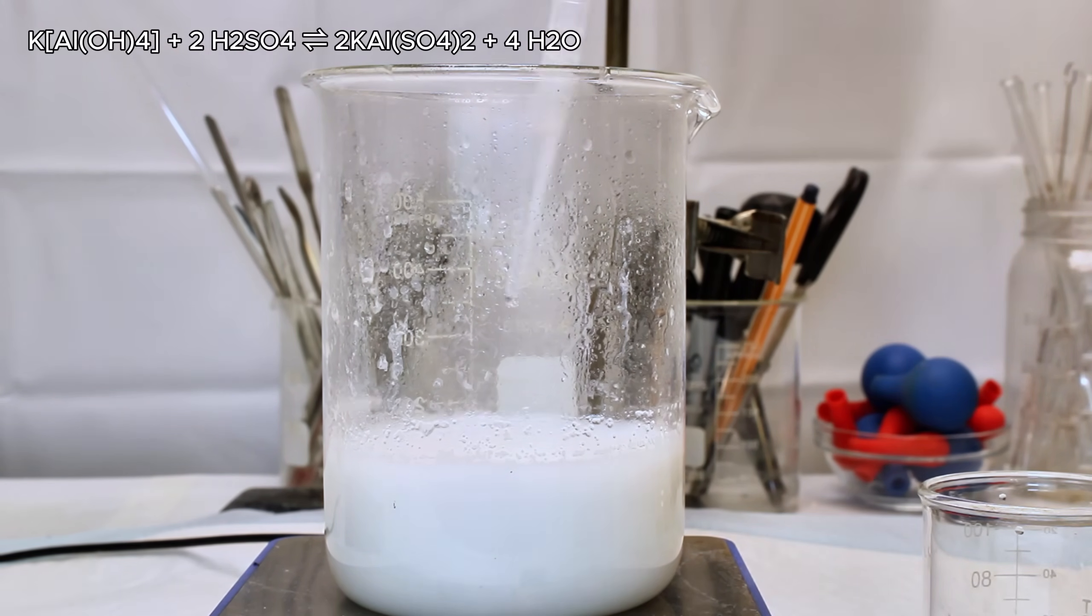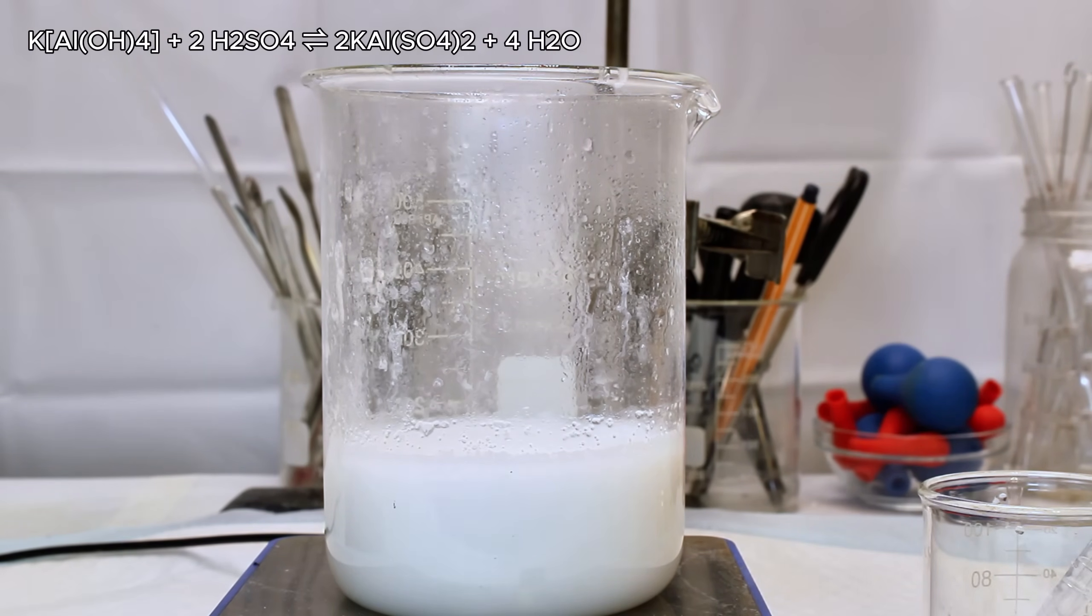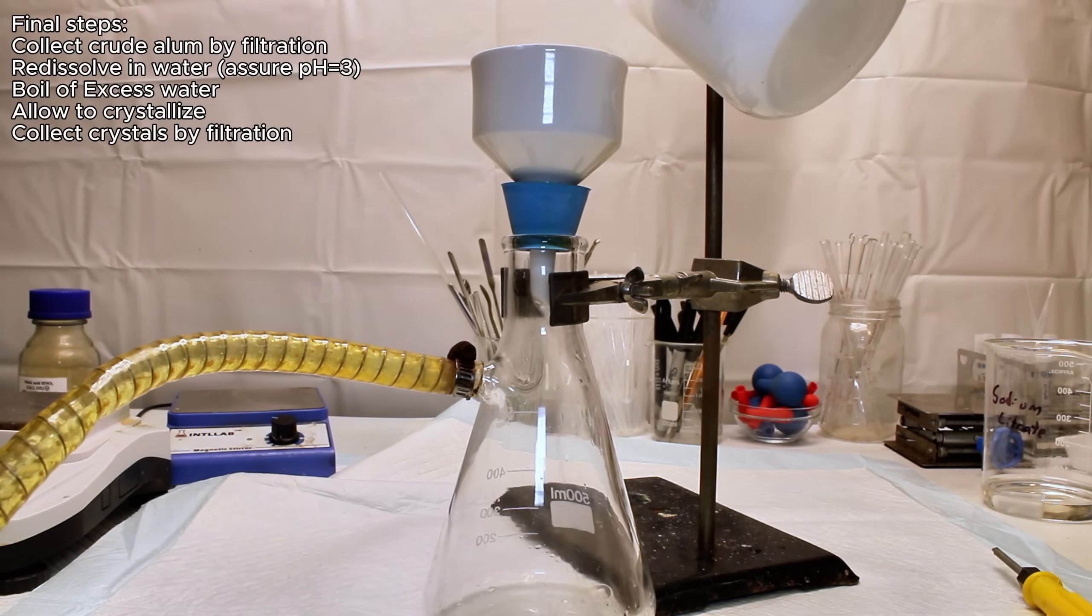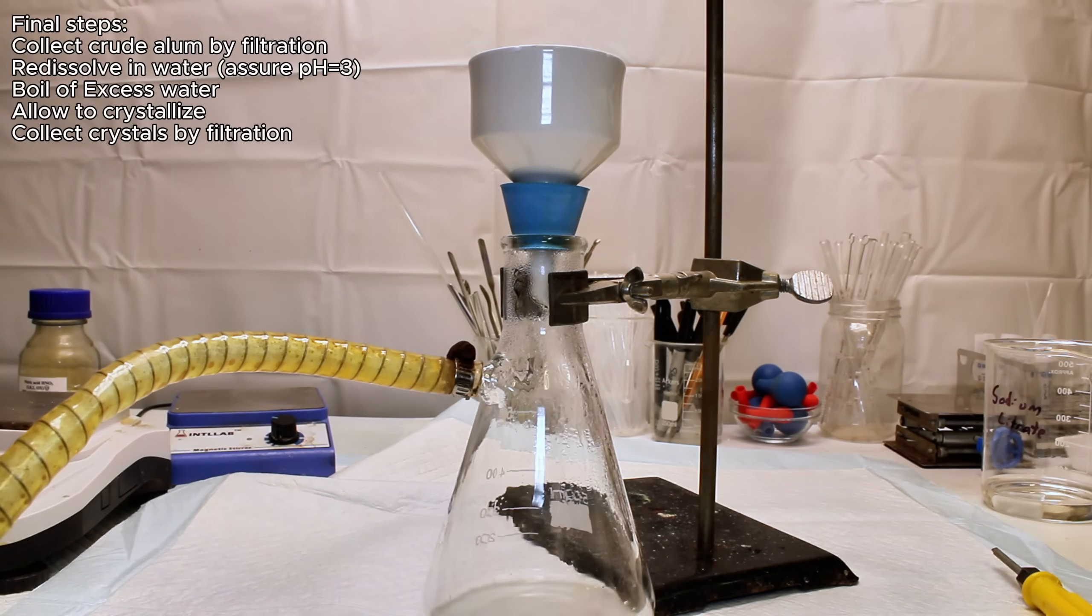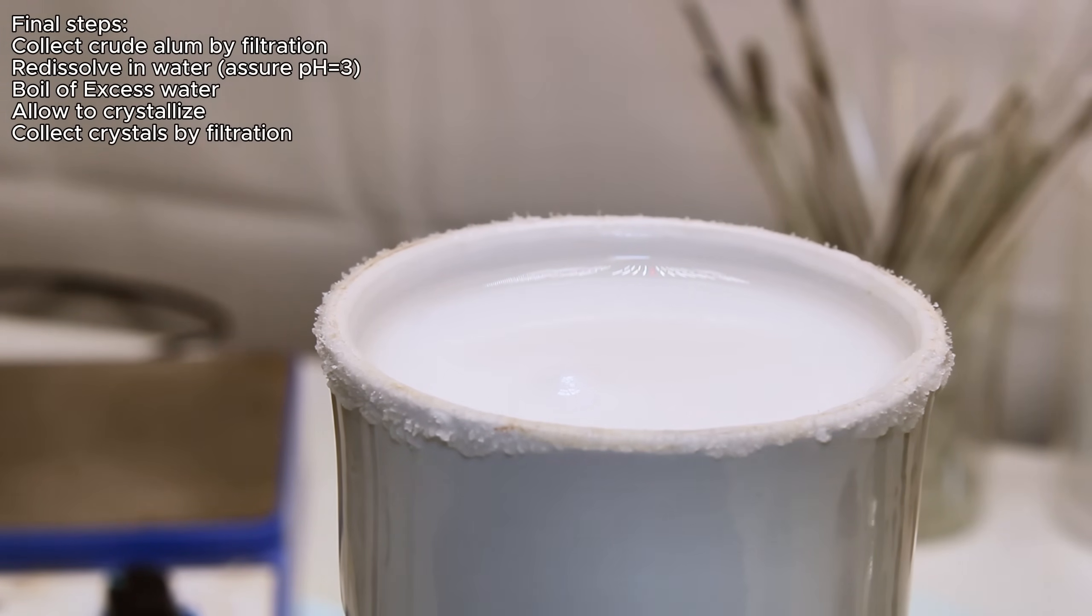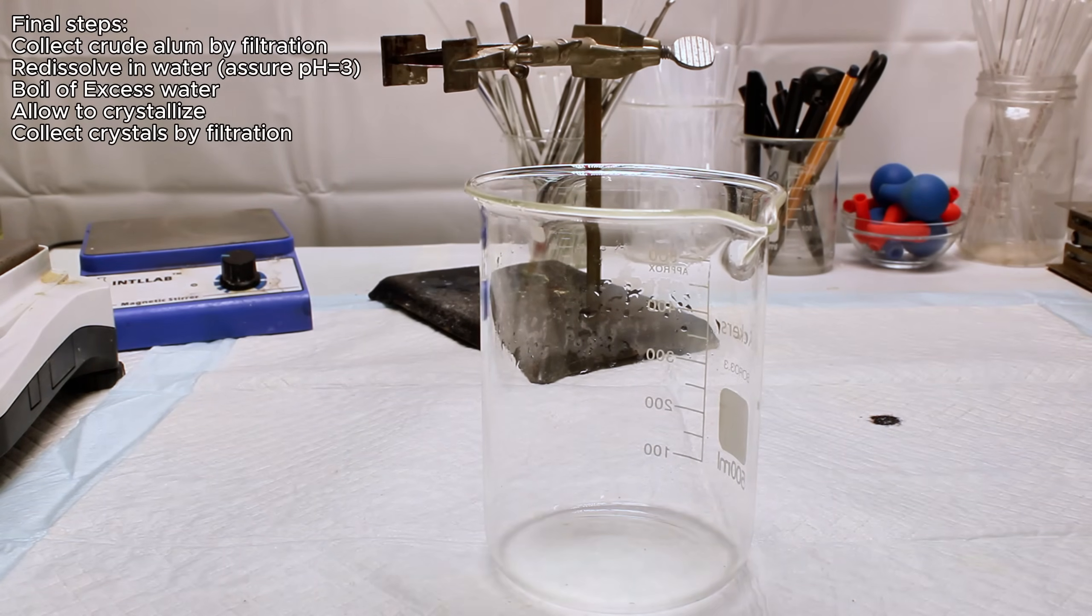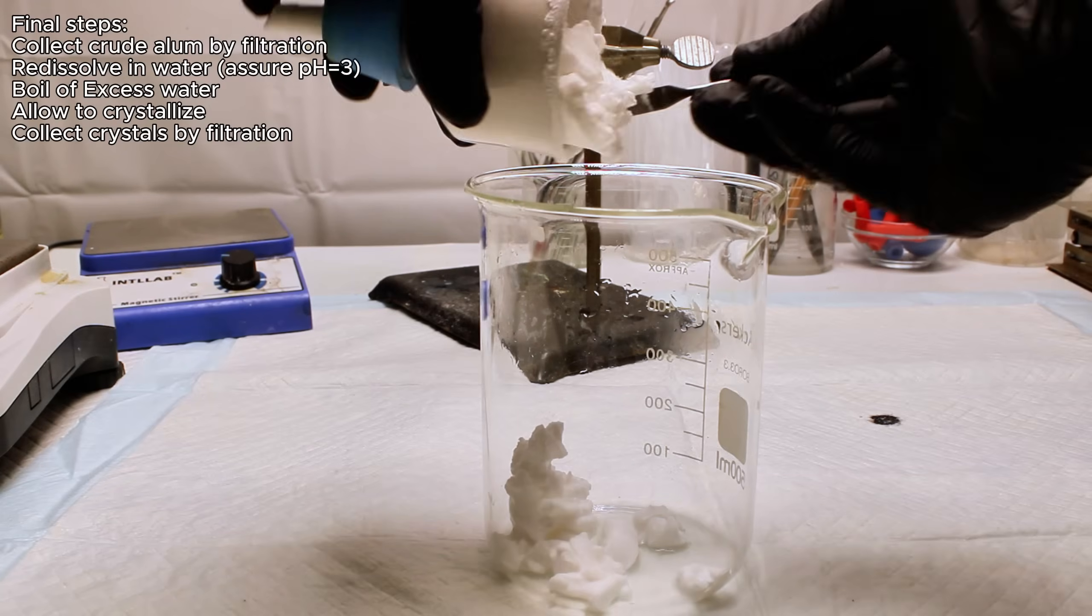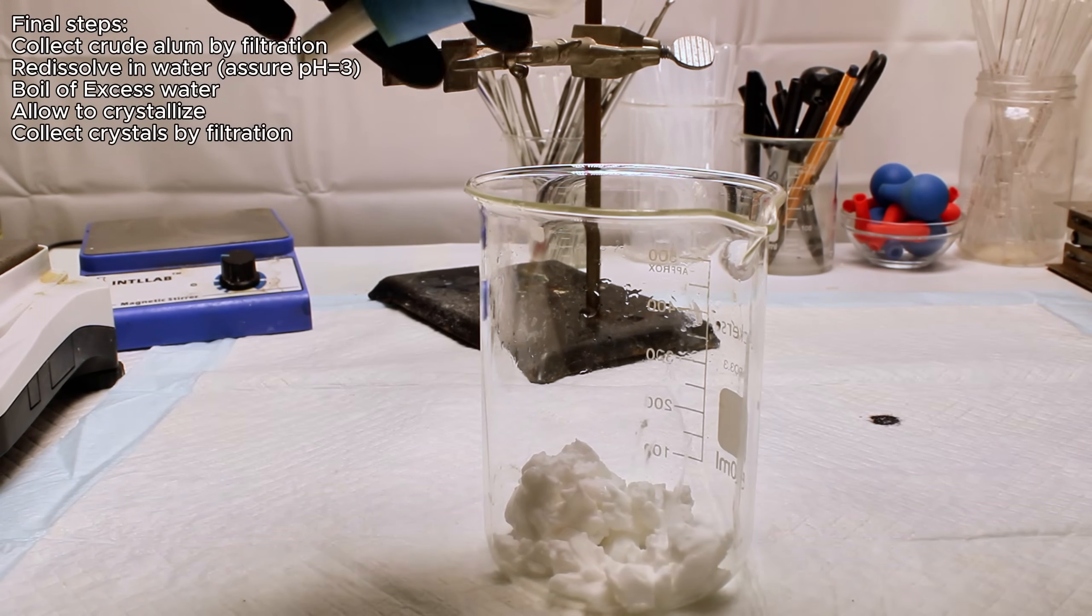And as a side note, if you use a larger volume of water than I did here, this step may result in the white precipitate redissolving. I went ahead and filtered my crude alum to remove any leftover impurities from the aluminum foil, transferred it to a beaker, and then added boiling water until it completely dissolved. I then balanced the pH back down to 3 with a bit of sulfuric acid before boiling off as much excess water as possible.